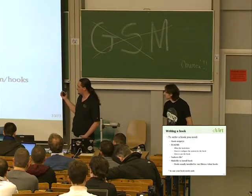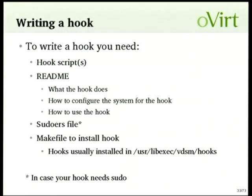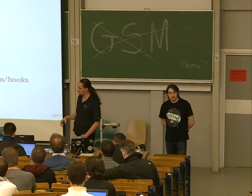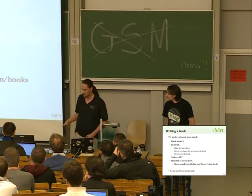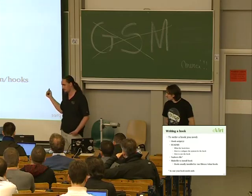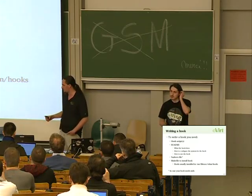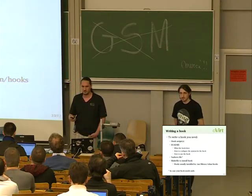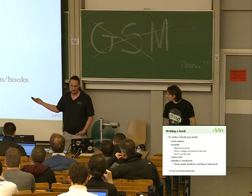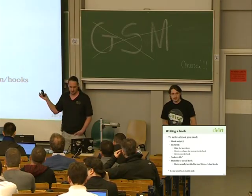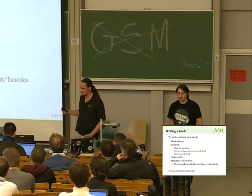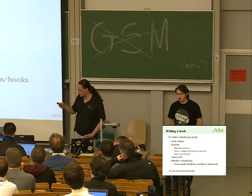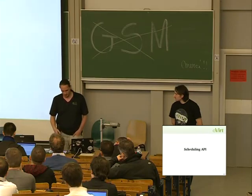How do you write a hook? You need hook scripts — the Python scripts that do the work — usually a readme describing what the hook does, how to configure it, and how to consume it via oVirt. You may need a sudoers file if your hook calls external commands. And you need a makefile to install the hook. All of these exist in the VDSM source code under the VDSM hooks directory, where you can look at different hooks for inspiration.